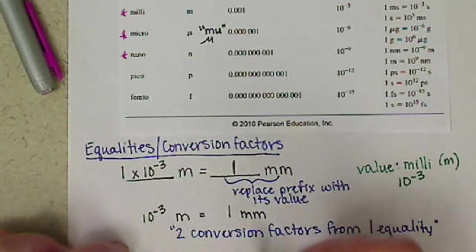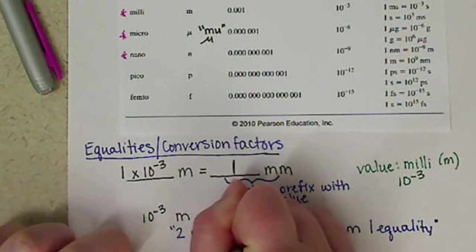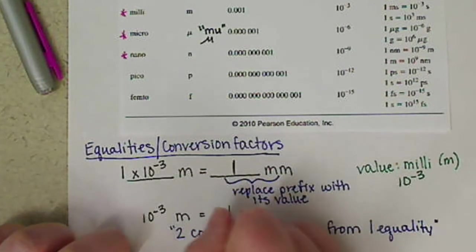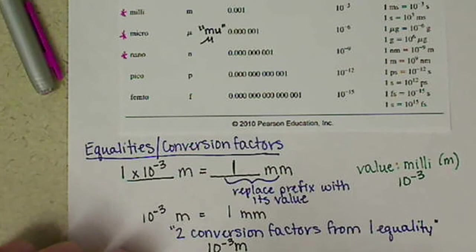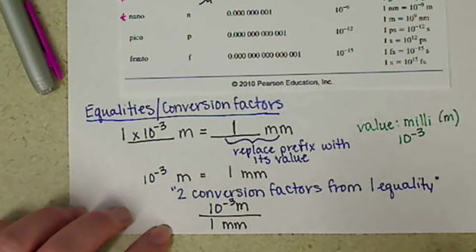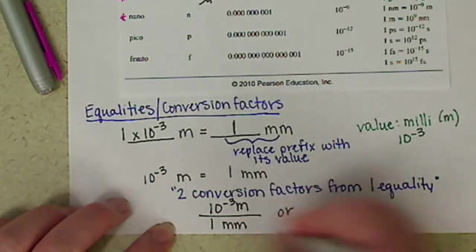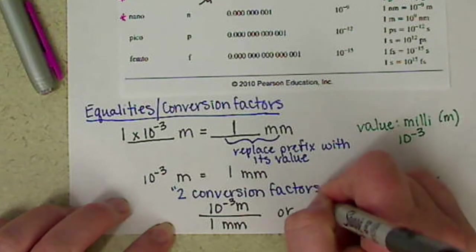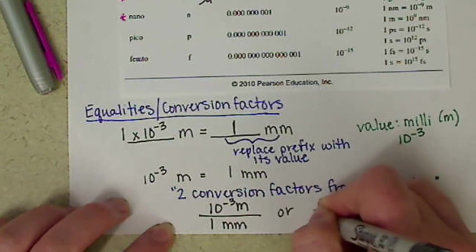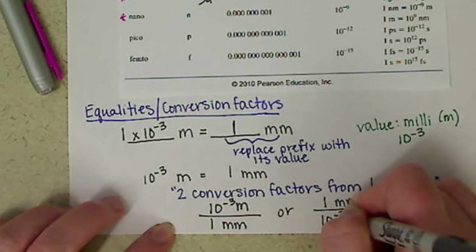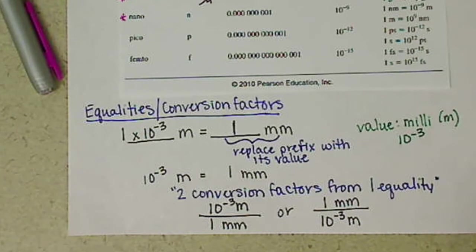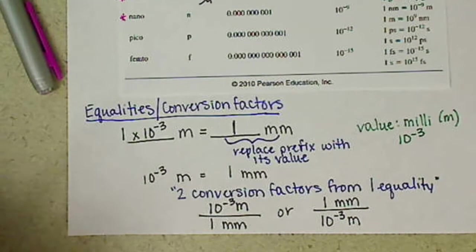We can either have 10 to the negative 3 meters over 1 millimeter. That is one conversion factor. Or our second conversion factor is the flip of this where we have 1 millimeter over 10 to the negative 3 meters.